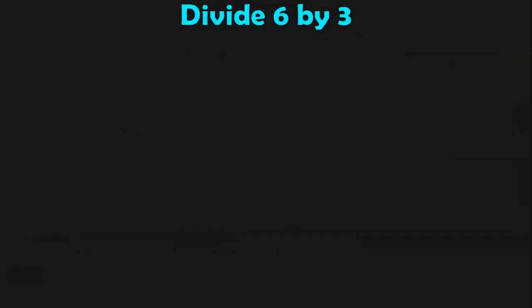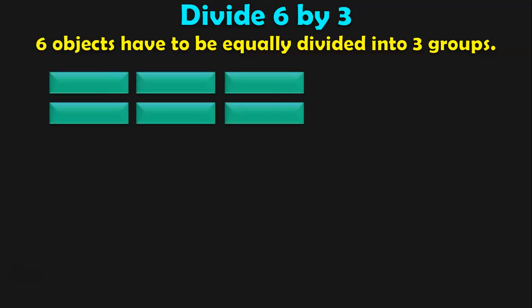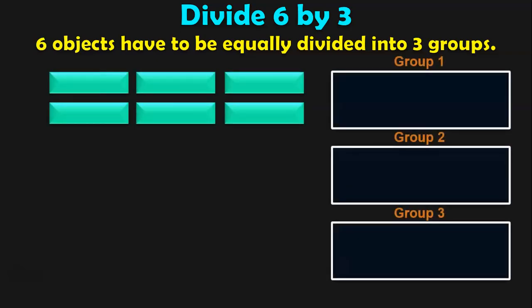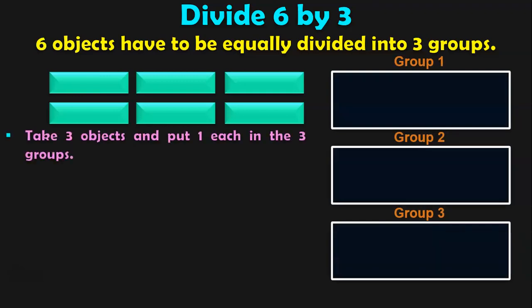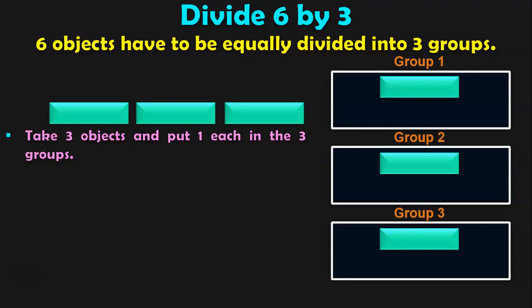Let us see the next example: divide 6 by 3. 6 objects have to be equally divided into 3 groups. So here we have 6 rectangular objects and 3 groups. Let us first begin by taking 3 objects and putting 1 each in the 3 groups. We are taking 3 objects because we have to divide 6 by 3.